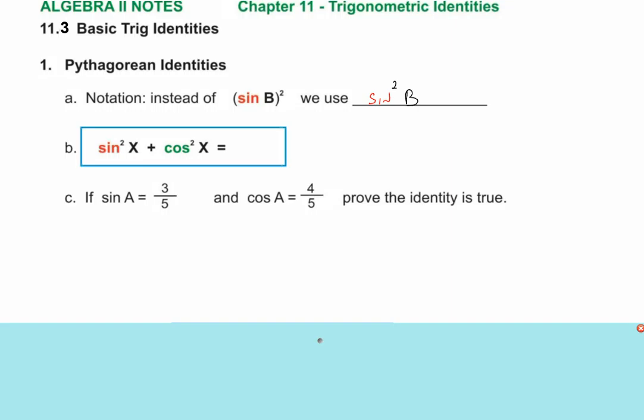The first one is the Pythagorean identity. It's really simple: it's the sine squared of an angle plus the cosine squared — of the same angle, right? Sine x and cosine x are the same angle. And they equal one. So sine squared x plus cosine squared x equals one.